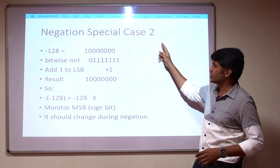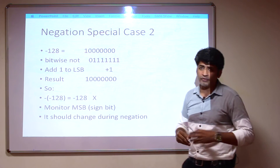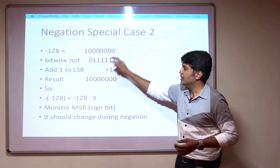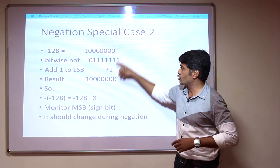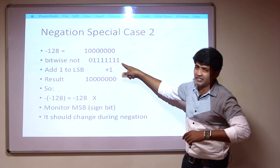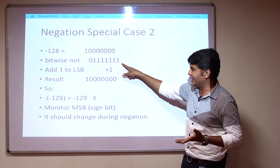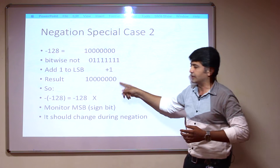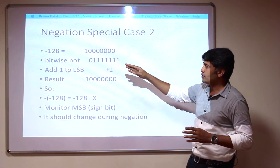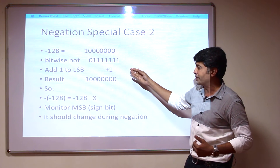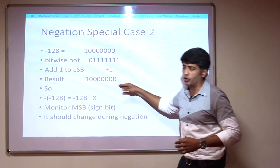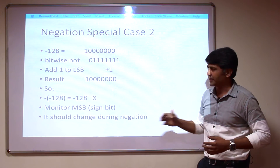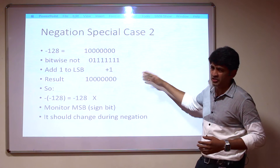Negation special case 2: for minus 128, this is the 8-bit value for minus 128. Take the bitwise NOT complement, then add 1 to the least significant bit. The result is the same value — minus 128. So taking the 2's complement of minus 128 gives back minus 128, which is this negation special case 2.